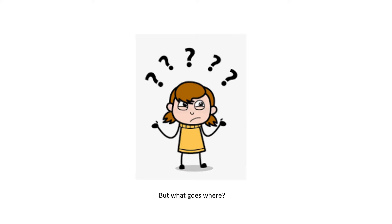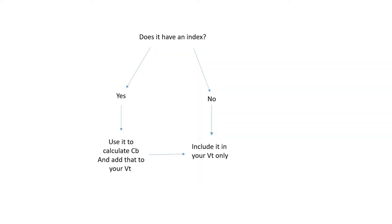The first thing that you want to do is take a look at all of your potential fluids that you're putting in there and ask yourself a question: Does it have an index? If the answer is yes, then you are going to want to use it to calculate your CB.